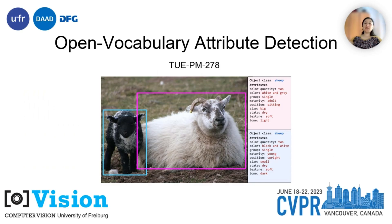To conclude, further research on attribute detection is crucial. The OVAD benchmark provides a significant step toward testing visual language models on attribute recognition. We have made our dataset and baseline open source — please visit our poster for more details, and thank you for your attention.